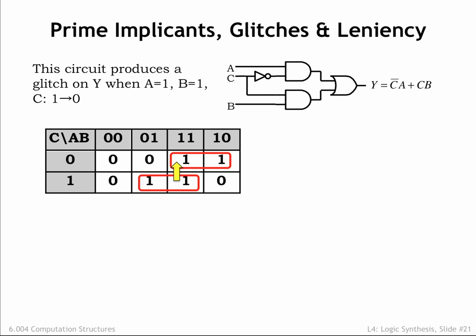That particular situation is shown by the yellow arrow on the K-map, where we're transitioning from the cell on the bottom row of the column to the cell on the top row. It's easy to see that we're leaving one implicant and moving to another. It's the gap between the two implicants that leads to the potential glitch on Y.